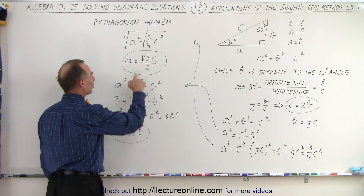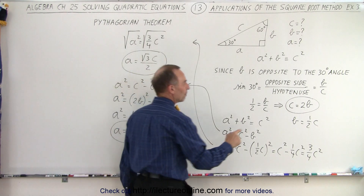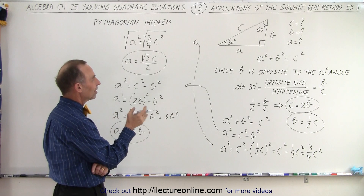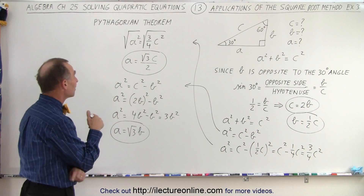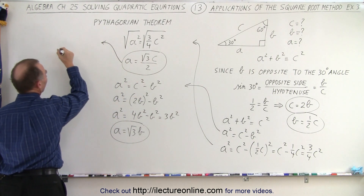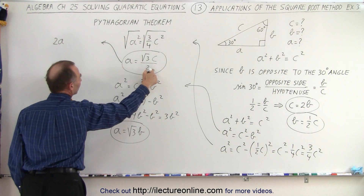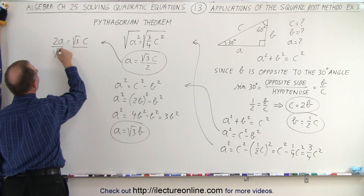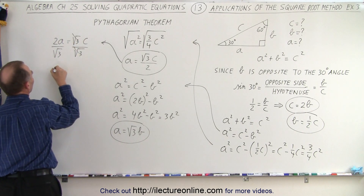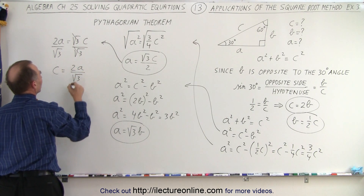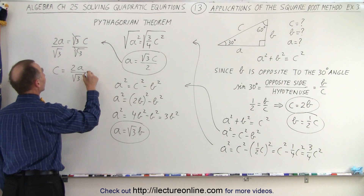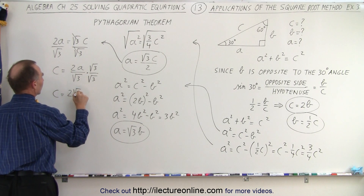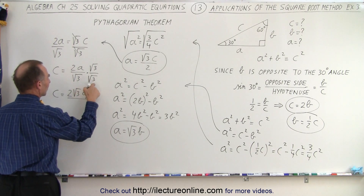So we have a relationship between a and b, as well as between a and c and between b and c. Now let's find c in terms of a. Cross-multiplying, we get two a equals the square root of three times c, then dividing both sides by the square root of three. That cancels out, giving c equals two a divided by the square root of three. As one of the viewers indicated, you shouldn't leave a radical in the denominator, so let's multiply both top and bottom by the square root of three. That gives c equals two times the square root of three times a divided by three.